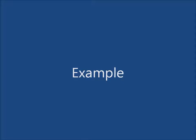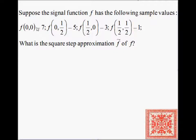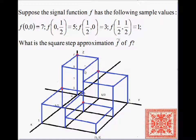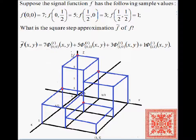Let's go through a quick example. Suppose we have the signal function: f(0,0) = 7, f(0, 1/2) = 5, f(1/2, 0) = 3, and f(1/2, 1/2) = 1. We draw these as poles at their respective positions, then scale them by drawing cubes of specific height in each cell to produce the two-dimensional step approximation.